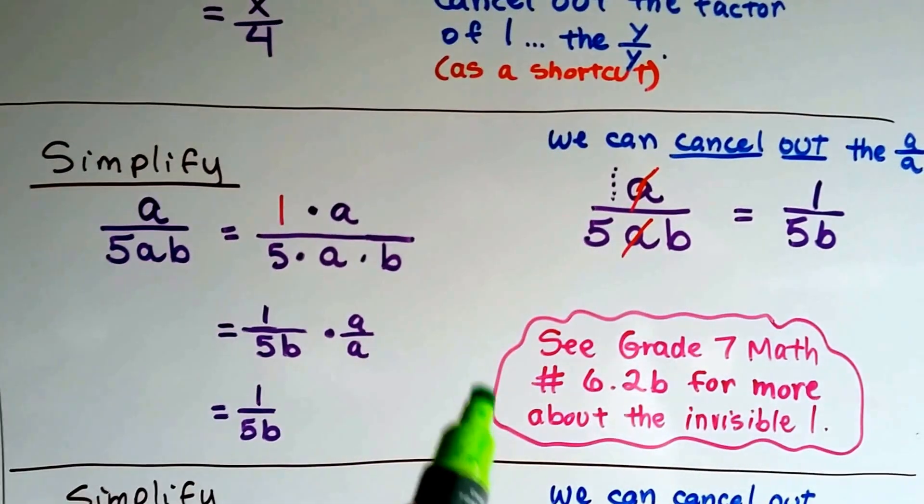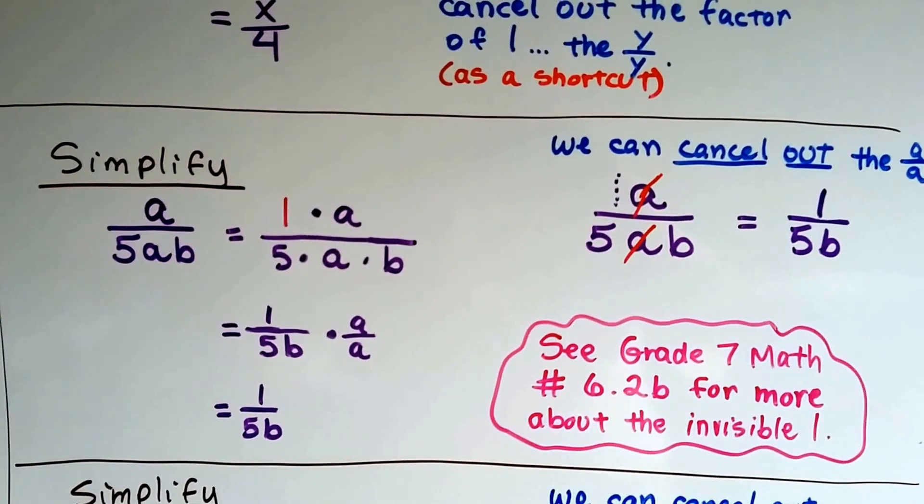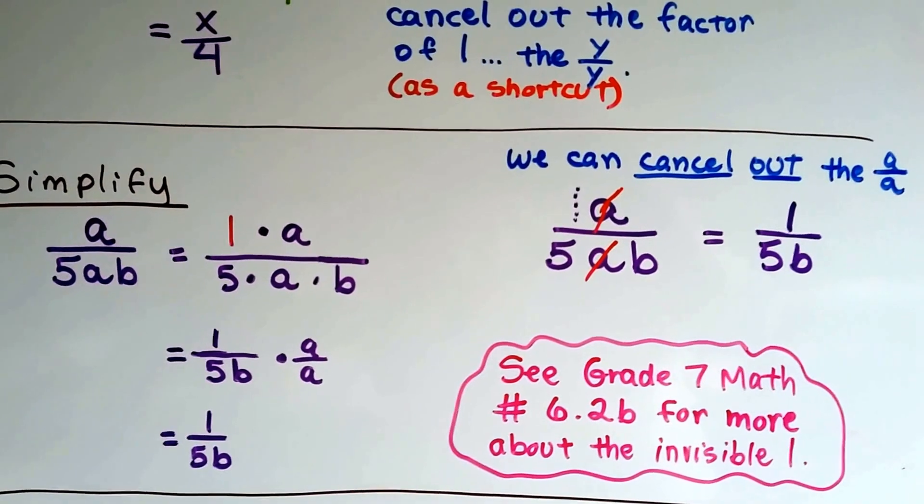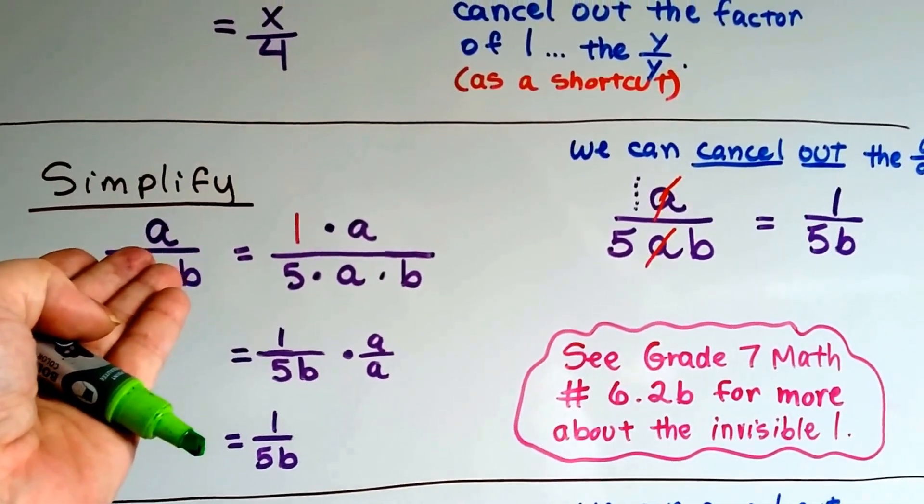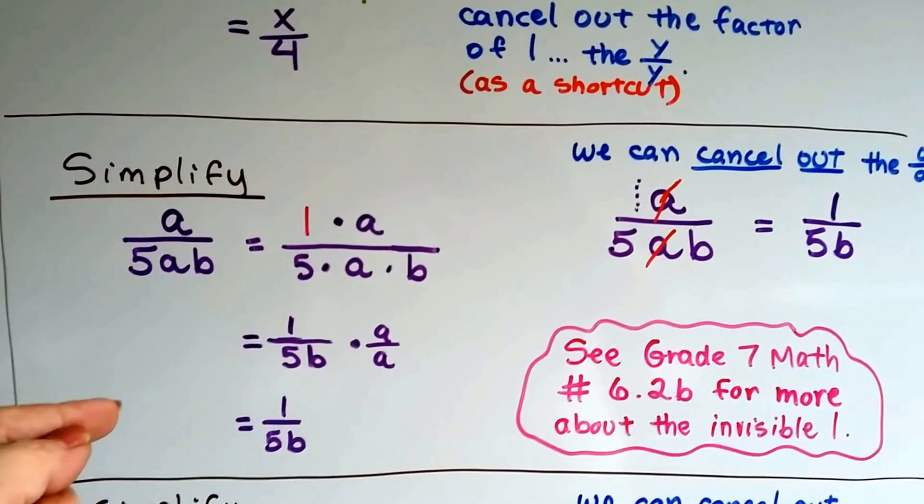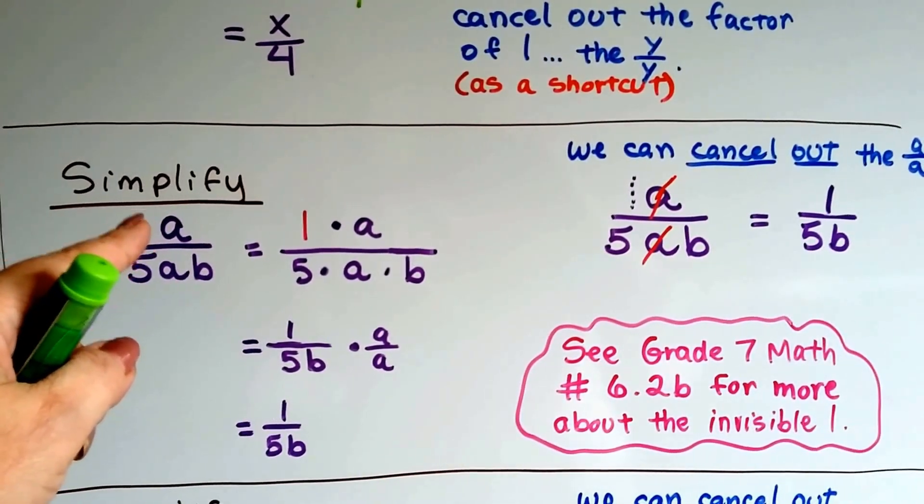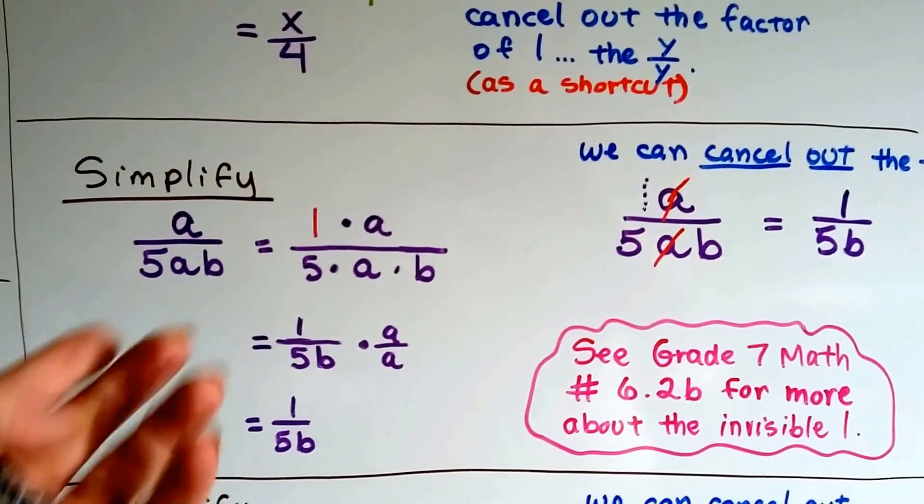Now, if you've seen my grade 7 math videos, you know about the invisible 1. In front of every single variable is a little invisible 1. We don't write it because when we look at the a, we know there's only one a there. When there's two of them, we need to know there's two, and that's when we put a coefficient in front of the a. But when there's only one there, we don't need to write a 1 because we can see there's only one.